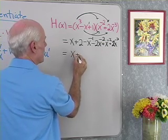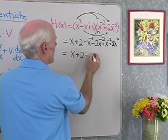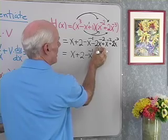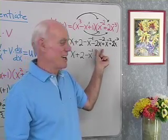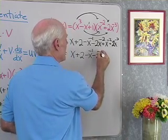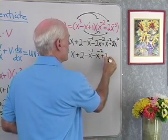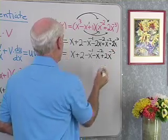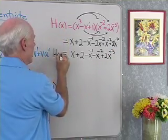I'll simplify this a little bit. x + 2 - x⁻¹. I have -2x⁻² + x⁻², so that's just minus 1x⁻² + 2x⁻³. That's h(x).